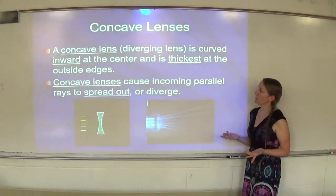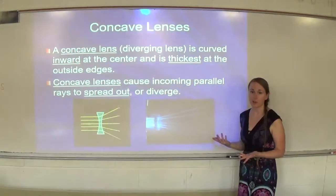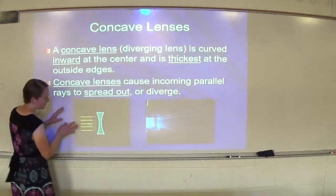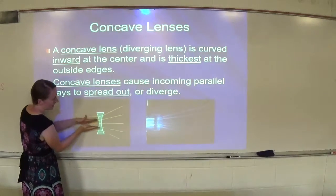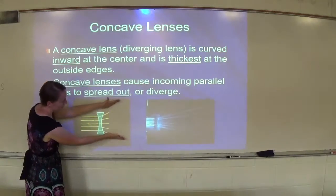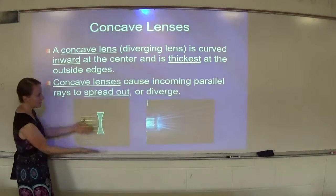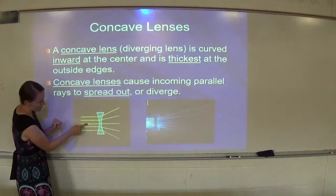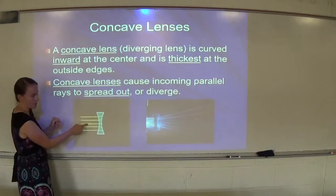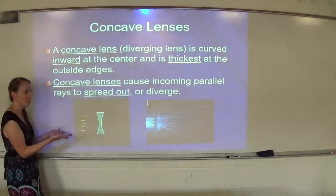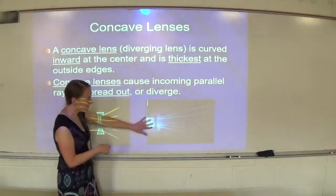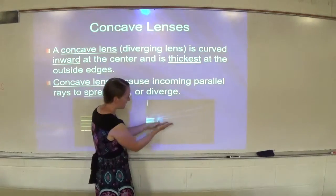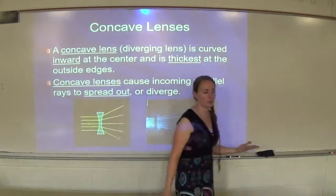Concave lenses cause incoming parallel rays to spread out or diverge. You can see in this animated example how the light waves come in and then spread out. The image forms where it appears the light came from — as shown by those dotted lines, it appears to come from a point it didn't actually originate from. Here's a real example showing beams of light spreading out as they pass through a concave lens.